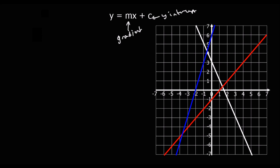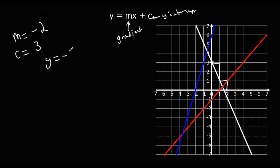Let's start by looking at the white line. Every one it goes across, it's going down two spaces, so it's got a gradient of minus two. It's crossing the y-axis at three, so c is three. That means the equation is y equals minus two x plus three.